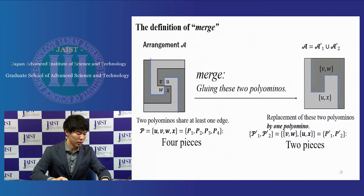We repeat merging of two polyominoes in the partial arrangement A' as many times as we can. We call this operation a merge of the subset P' of P. We suppose that we obtain a single polyomino P' after merging all elements in the subset P' of P.